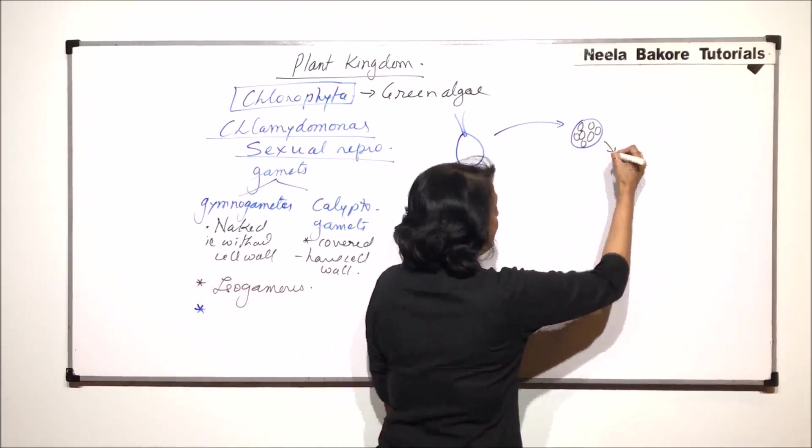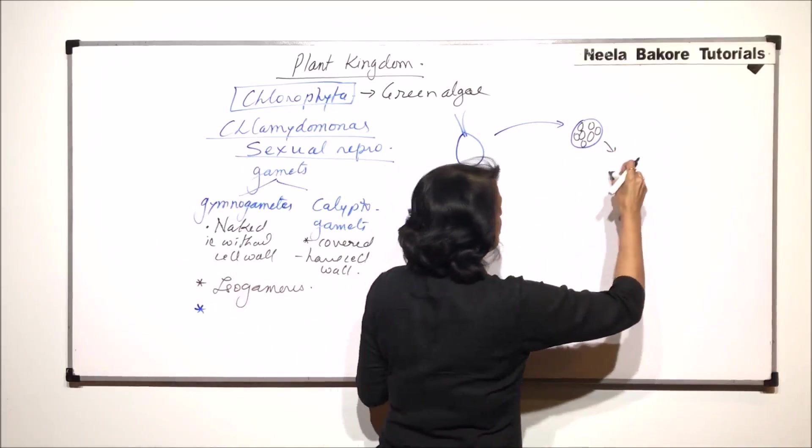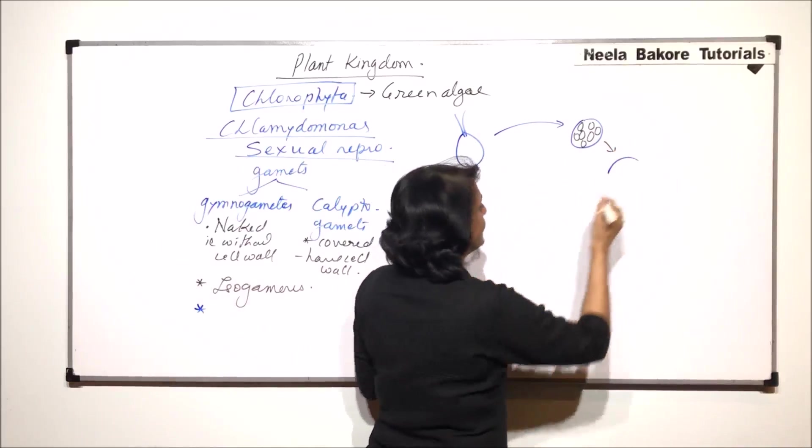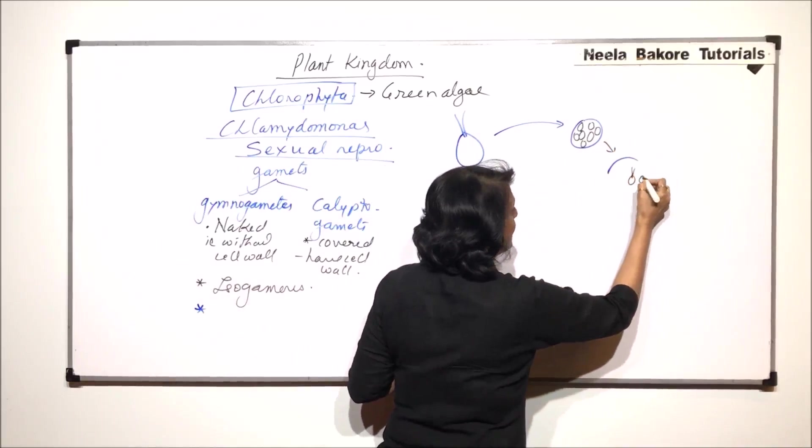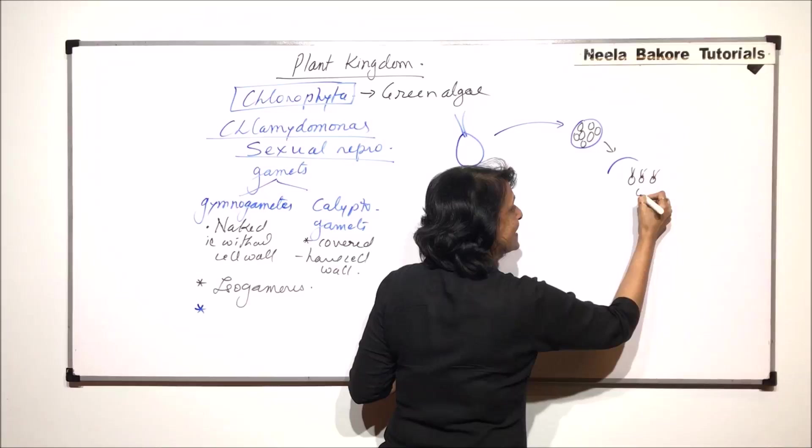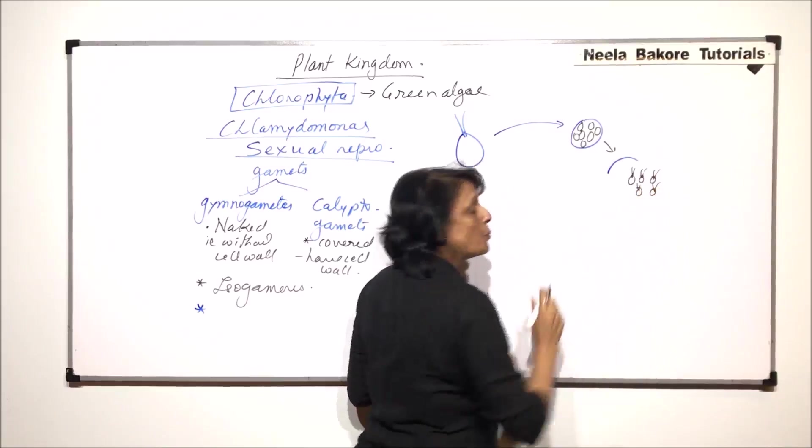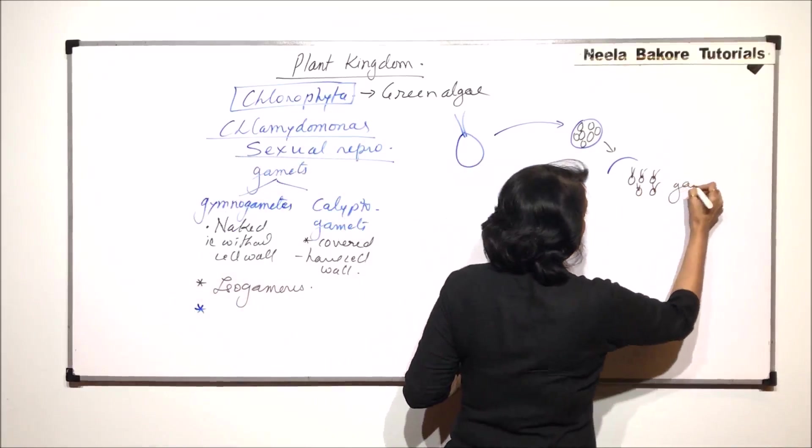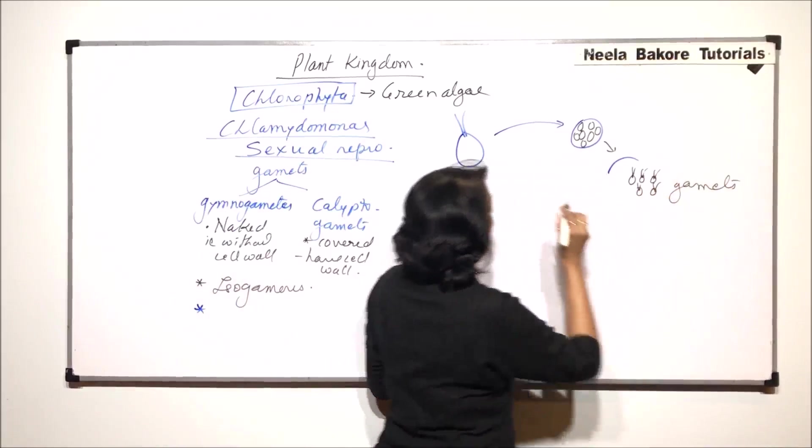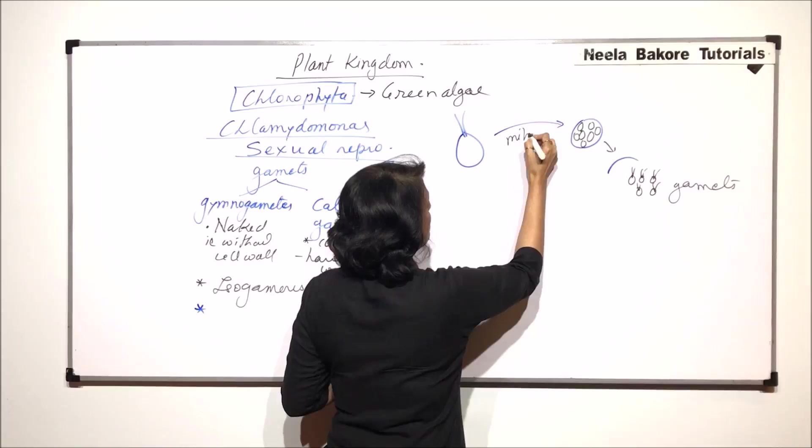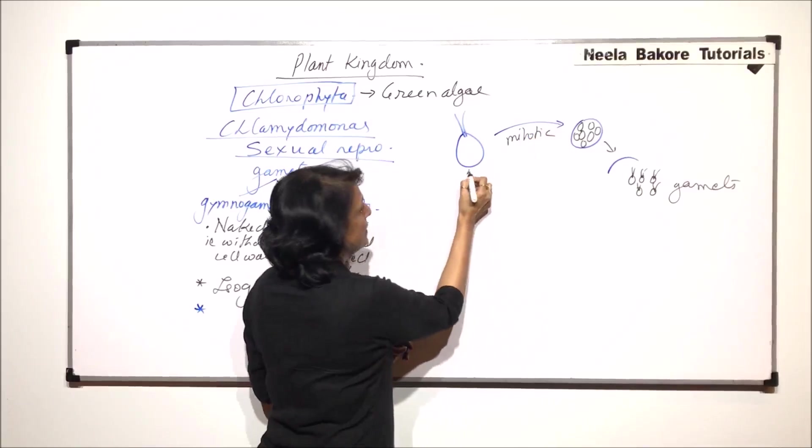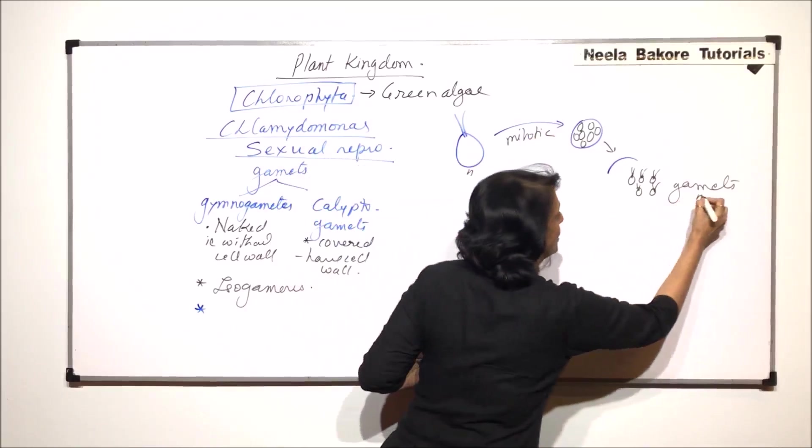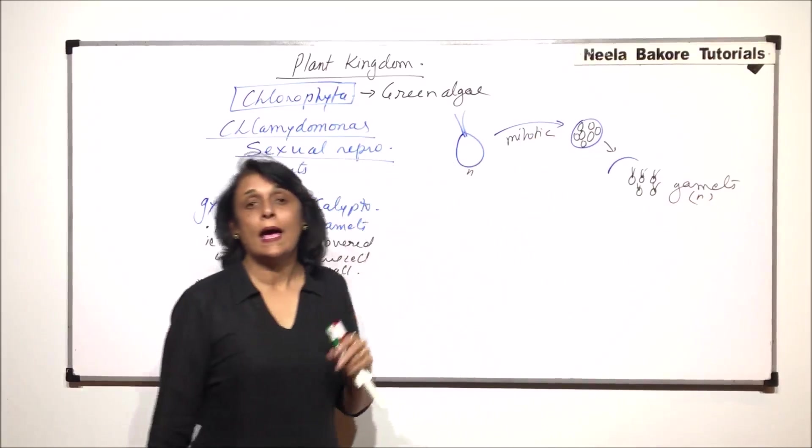After this, the parent cell is going to rupture, releasing these gametes. These gametes are biflagellate, they resemble the zoospores but they are smaller in size. These are the gametes which are formed. The division here is mitotic division. This is haploid and the gametes which are produced are also haploid.